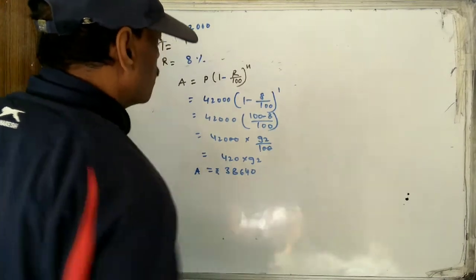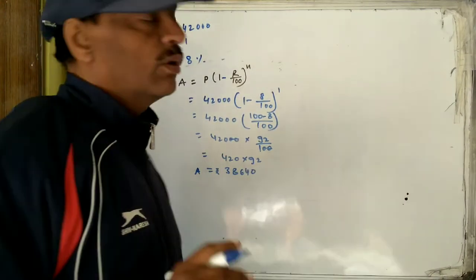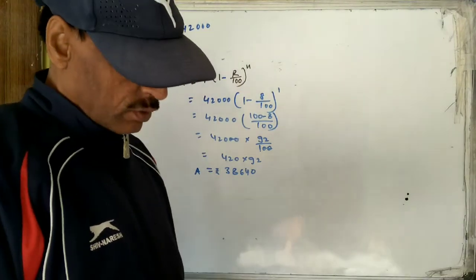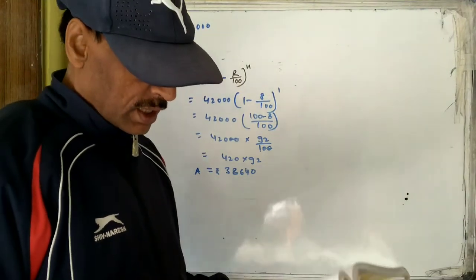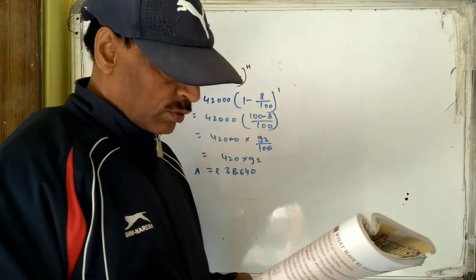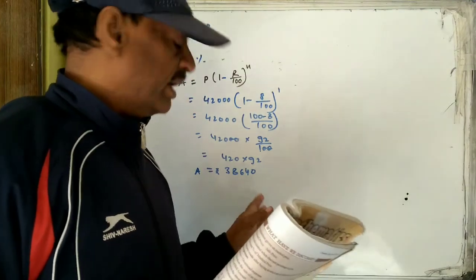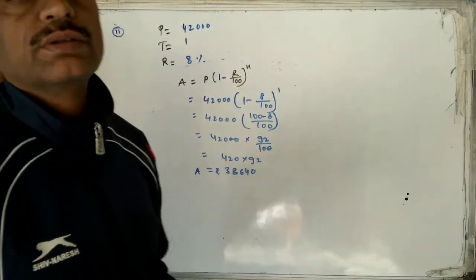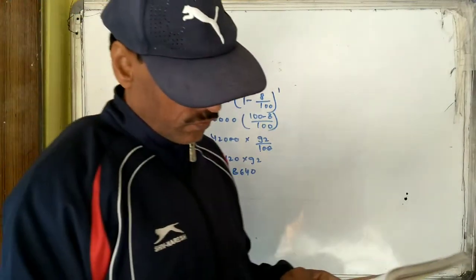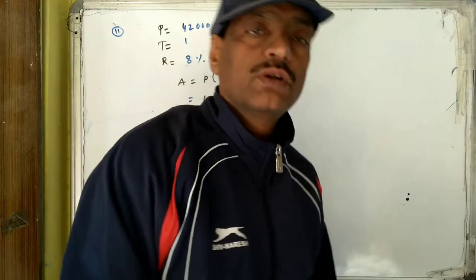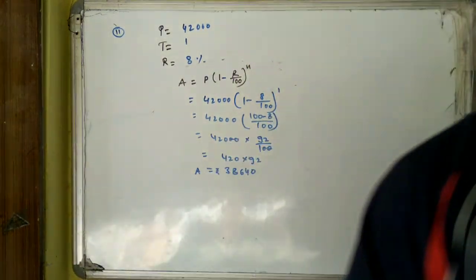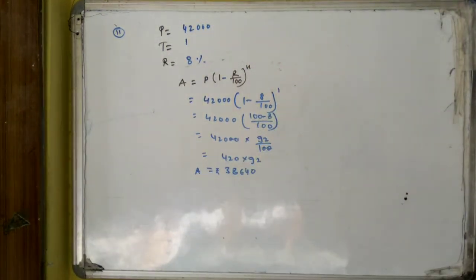In every question, the last line should state the answer clearly — what was asked. So you must write: the value of the scooter after one year is Rs. 38,640. This is all for today and our chapter has been finished now. Thank you.